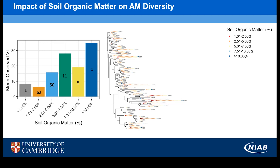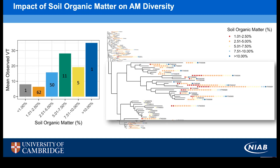More interestingly, we can now start to look at species distributions in relation to the metadata that FERRA collected. Here you're looking at the impact of soil organic matter on AM diversity — on the left, the mean number of taxa at each site classified by different levels of soil organic matter, and on the right, the distribution of individual AM taxa. Zooming in, the top branch is full of generalist taxa, with spots ranging from red and orange through yellow to blue, indicating soil organic matter of 1% to over 10%. But the bottom group of taxa are only observed in the 5% to 7.5% region, suggesting these may be specialists of that organic matter range.